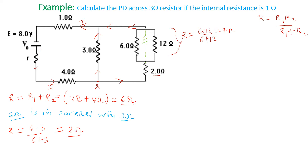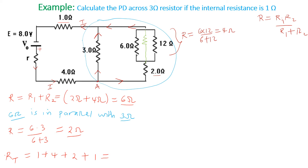So all those resistors combined give only a 2-ohm resistor. That means all the resistors in the circuit are now in series, so we find the total resistance: R total equals the internal resistance 1 ohm, plus 4 ohm, plus 2 ohm (the combined parallel section), plus 1 ohm. That gives 1 plus 4 plus 2 plus 1 equals 8 ohm.